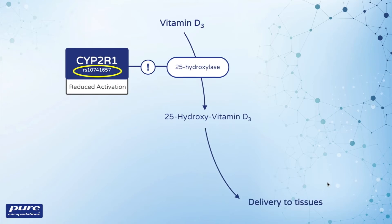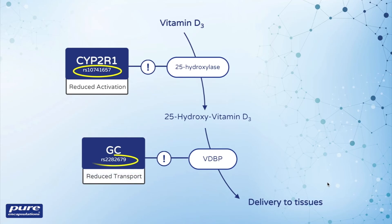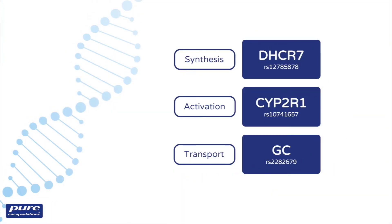Delivery of vitamin D to tissues requires a carrier called vitamin D binding protein, encoded by the GC gene. Individuals with a variation in this gene have lower levels of this transport protein. Individuals with these genetic variants should pay close attention to optimizing their vitamin D intakes.